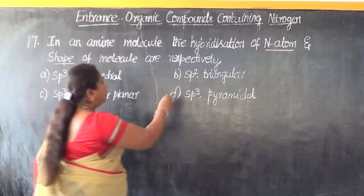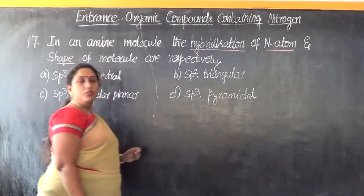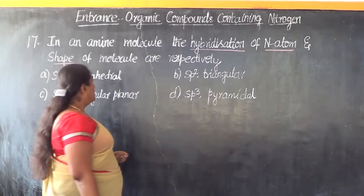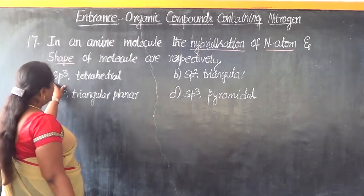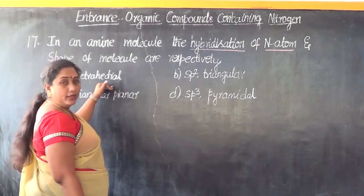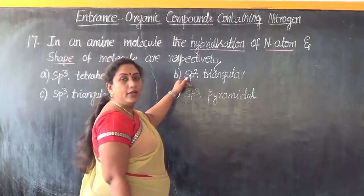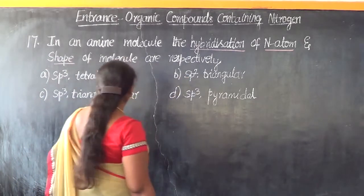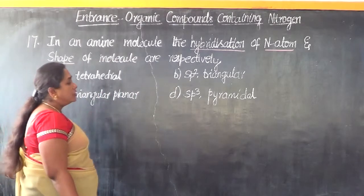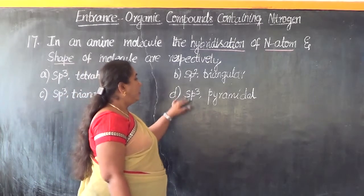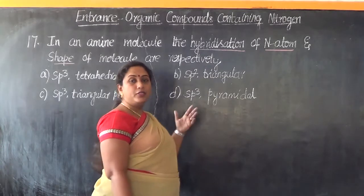So the question is about the type of hybridization and the shape of the molecule. Let us see the different options. Option A: SP3 hybridized maintaining a tetrahedral shape. Option B: SP2 hybridized maintaining a triangular shape. Option C: SP3 hybridized having triangular planar shape. Or is it SP3 hybridized having a pyramidal shape?